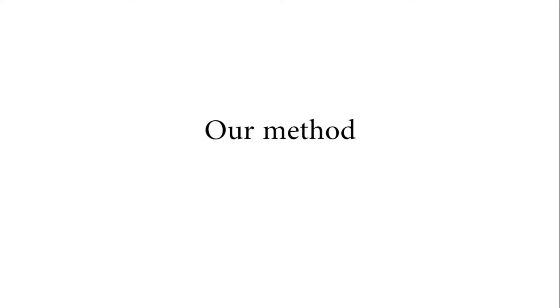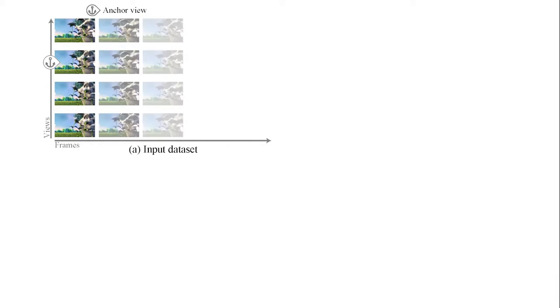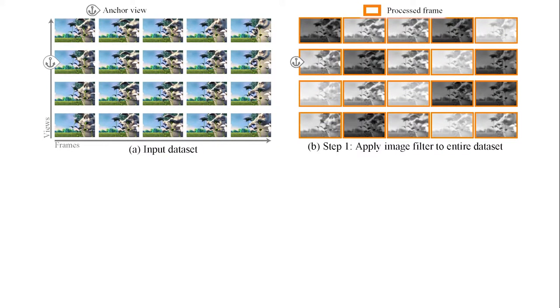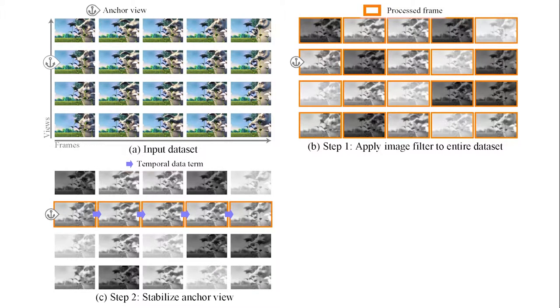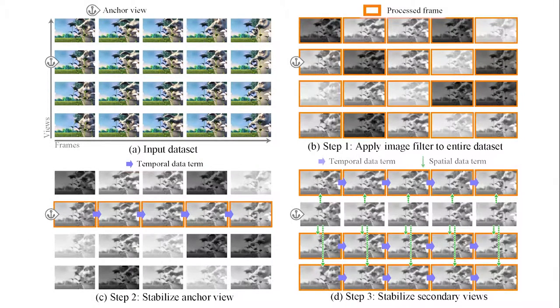We begin by picking an anchor view from the camera array input dataset. Then we apply the image filter to every frame in the dataset. Next, we stabilize in time across the anchor view, then stabilize in time for each secondary view, and in space between the anchor view and each secondary view.